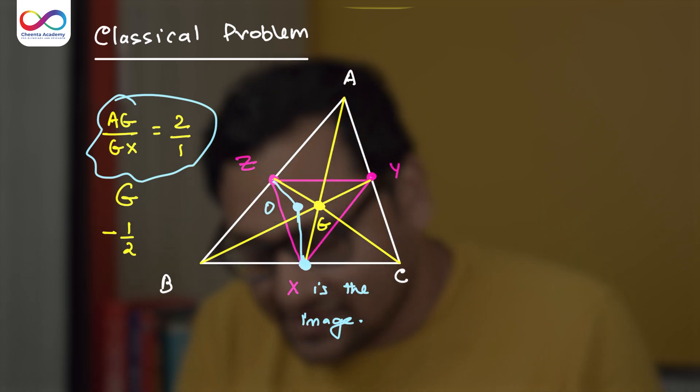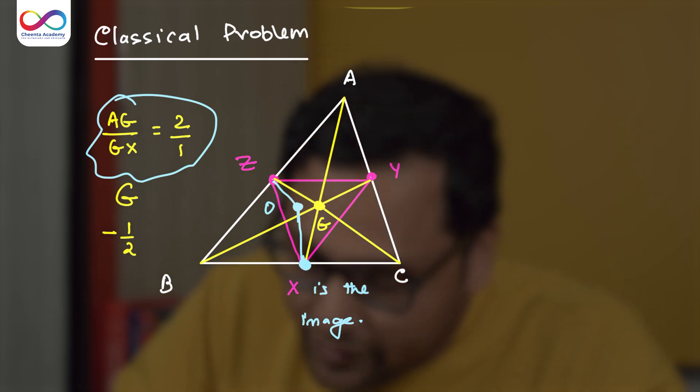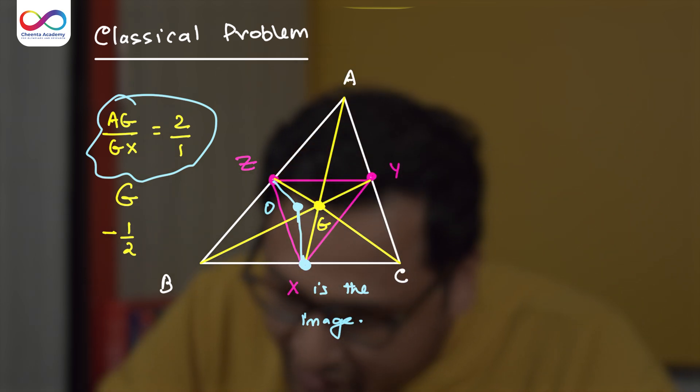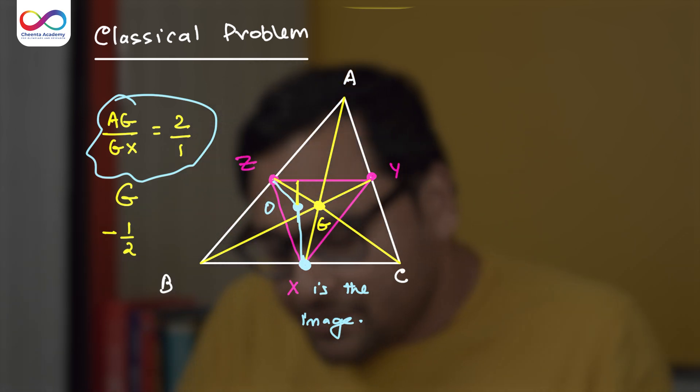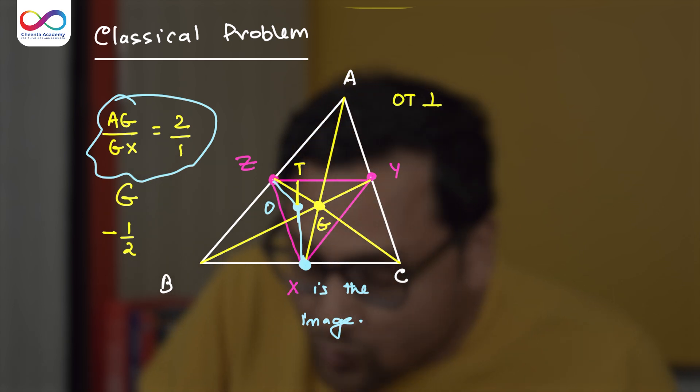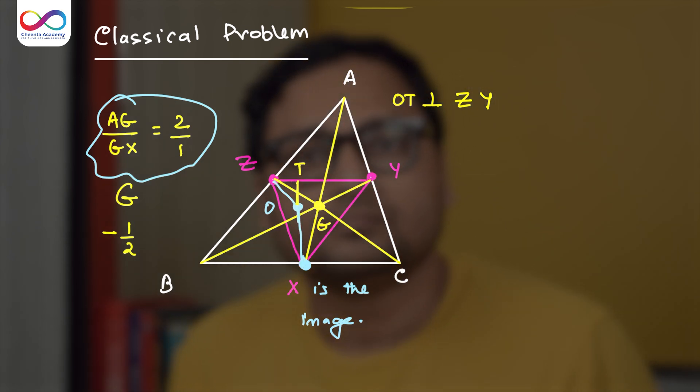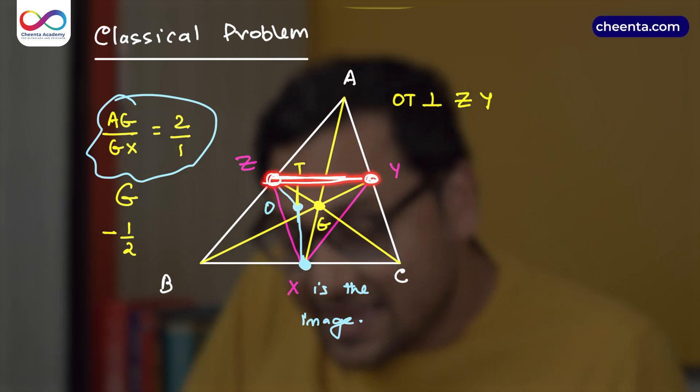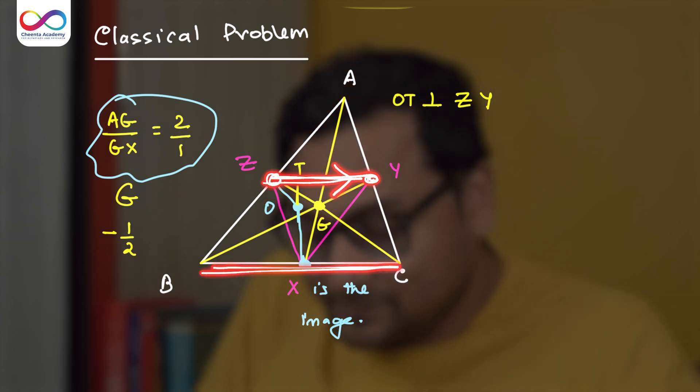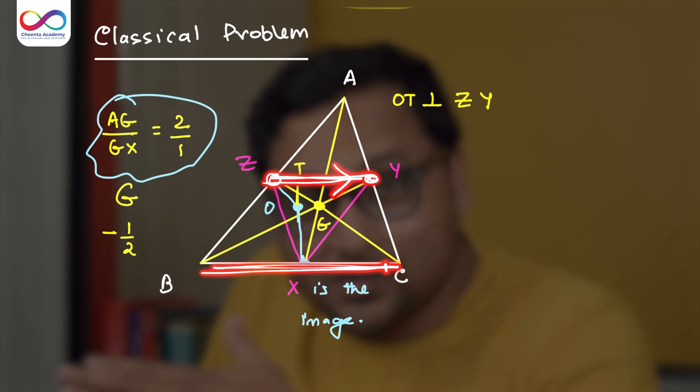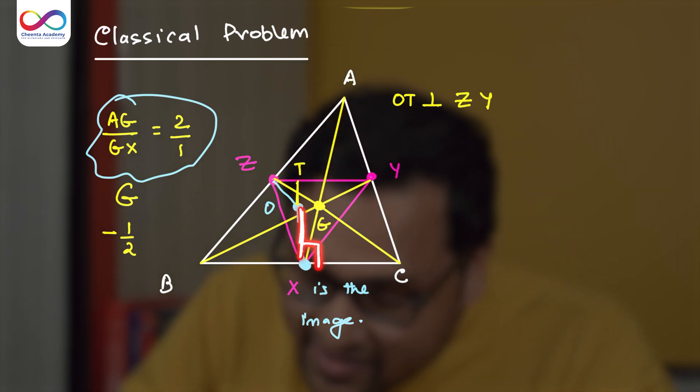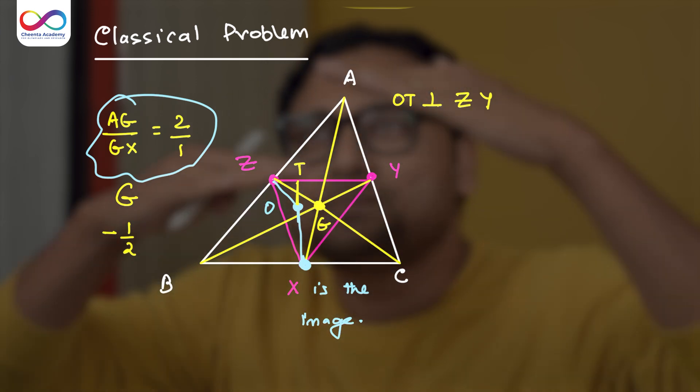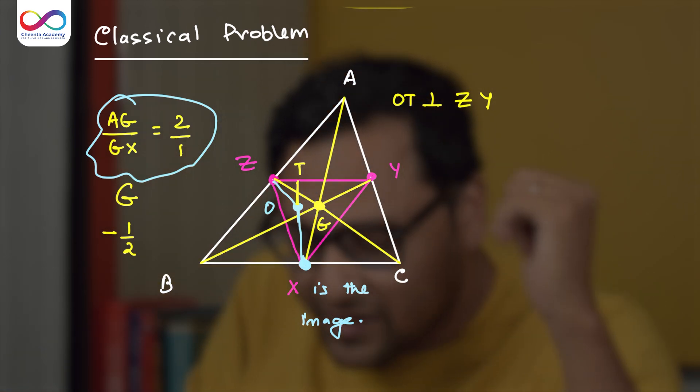What we will do is we will extend this OX a little bit. Let's call this point T. My claim is OT is perpendicular to ZY. Now, why is that? Notice that Z is the midpoint, Y is the midpoint. So ZY by midpoint theorem is parallel to BC. We have constructed OX to be perpendicular to BC. So surely it is perpendicular to anything that is parallel to BC, therefore it is perpendicular to ZY.